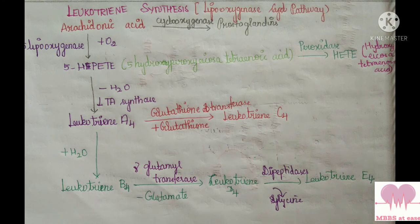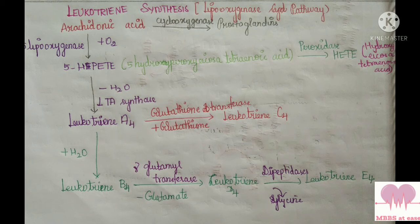Leukotriene synthesis is via the lipoxygenase pathway of arachidonic acid, whereas prostaglandin synthesis is via the cyclooxygenase pathway. Arachidonic acid on action with 5-lipoxygenase with the addition of oxygen gives 5-hydroperoxyeicosatetraenoic acid (5-HPETE). When water is removed and with the help of LTA synthase, we get leukotriene A4. With 5-HPETE, when peroxidase acts, we get 5-hydroxyeicosatetraenoic acid (5-HETE).